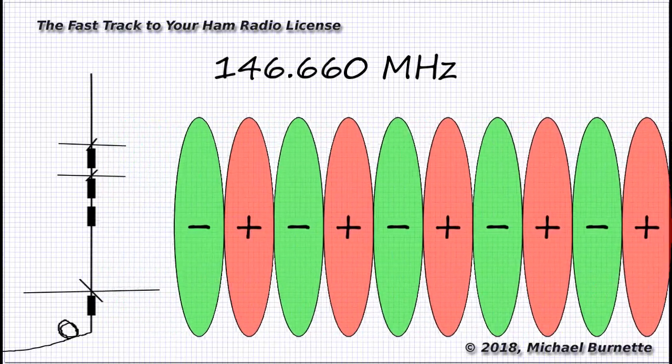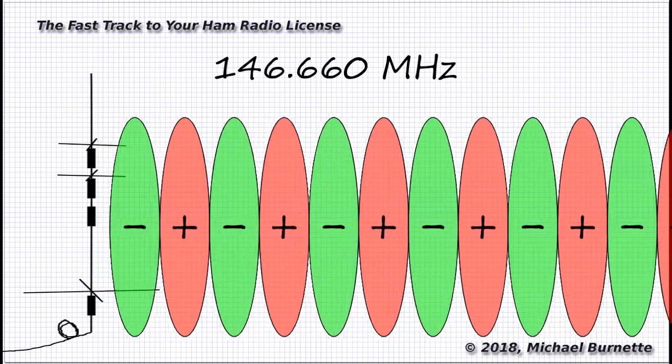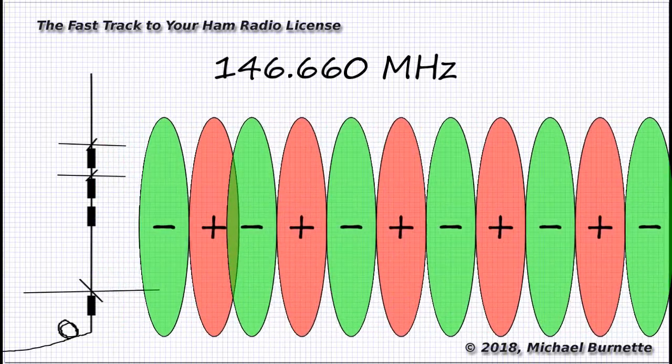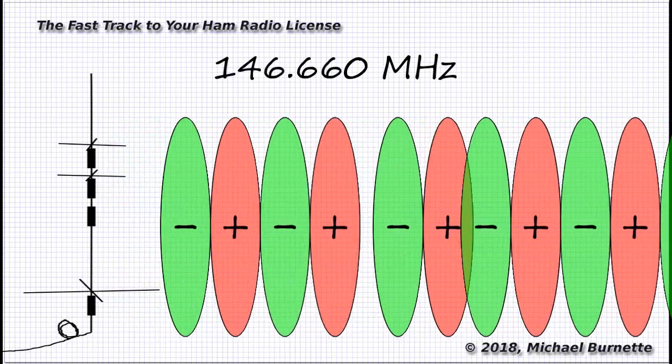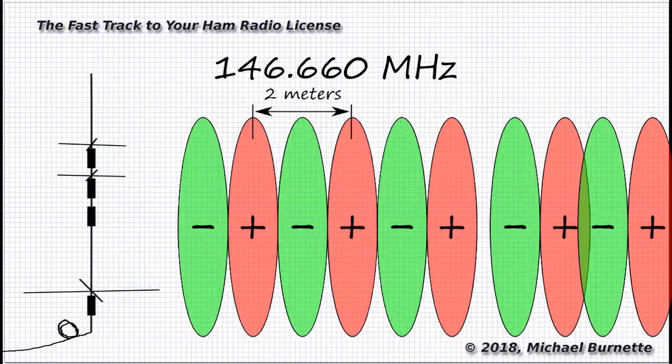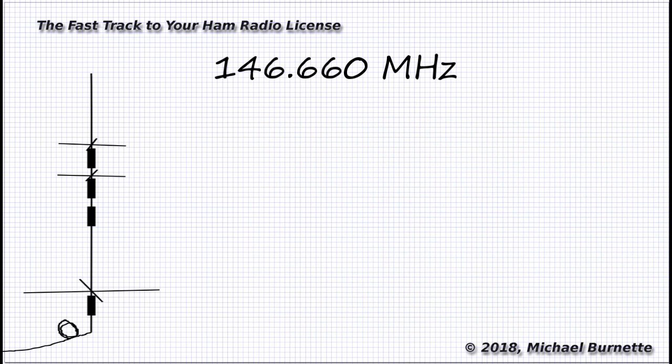That wave has a physical size that's not going to change. There's going to be a fixed physical distance between the positive peaks, and that's the wavelength of the signal. In this case, that's going to be approximately 2 meters. If we switch frequencies to the 70-centimeter band, say we switch to 440.0 megahertz,